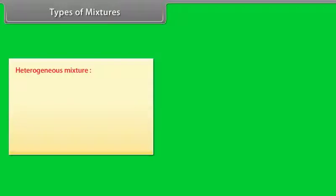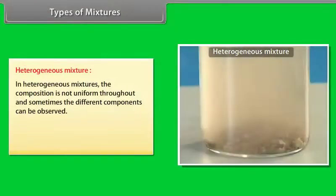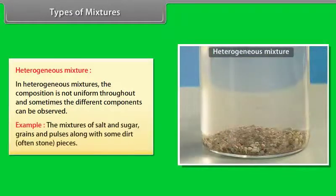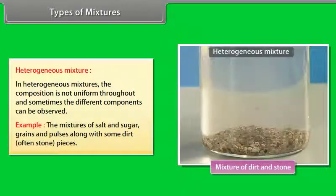In heterogeneous mixtures, the composition is not uniform throughout and sometimes the different components can be observed. Examples include the mixtures of salt and sugar, grains and pulses along with some dirt, often stone pieces.